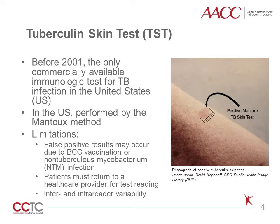The first type of test available for TB screening is the TST, which many of us are likely familiar with. Before 2001, this was the only commercially available immunologic test for TB infection in the United States. In the U.S., it is performed by the Mantoux method, in which 0.1 milliliters of tuberculin, also known as purified protein derivative or PPD, is injected intracutaneously into the volar surface of the forearm, and the area is examined 48 to 72 hours later for induration. If this area is large enough, it is interpreted as a positive screen for TB.